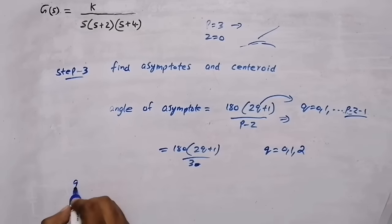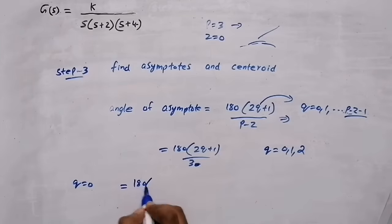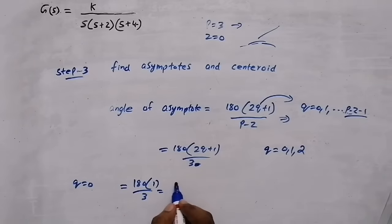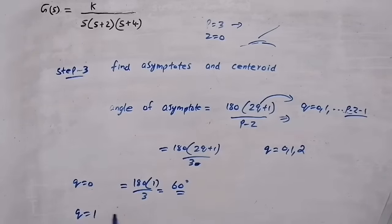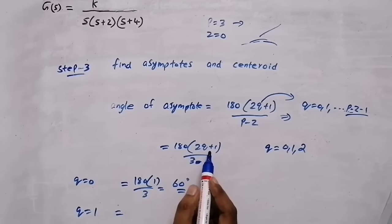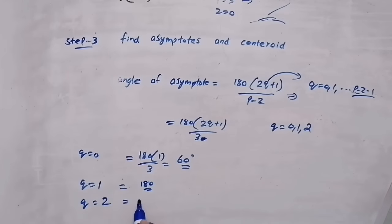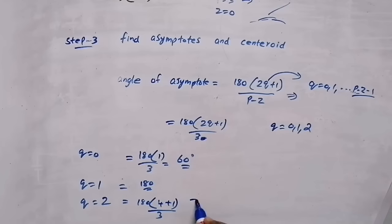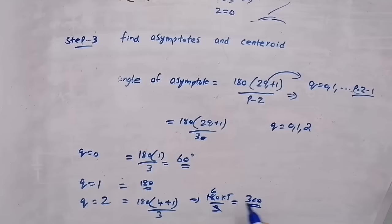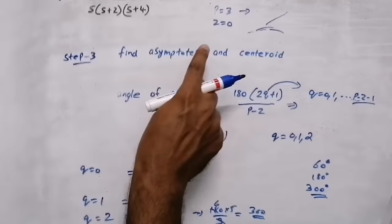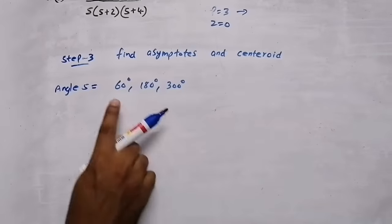For q=0: angle = 180°×(1)/3 = 60°. For q=1: angle = 180°×(3)/3 = 180°. For q=2: angle = 180°×(5)/3 = 300°. So the three angles of asymptotes are 60°, 180°, and 300°. Since there are three poles, there are three asymptotes.